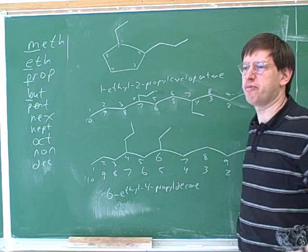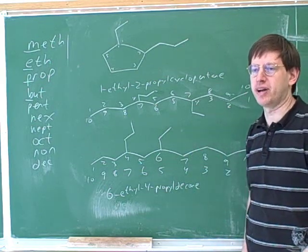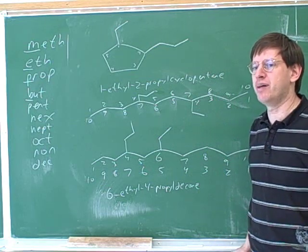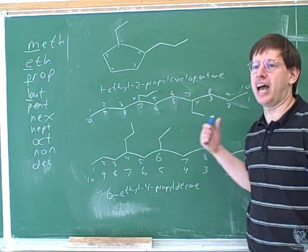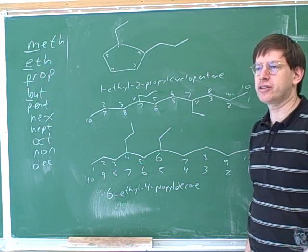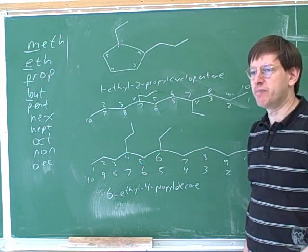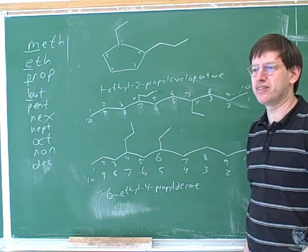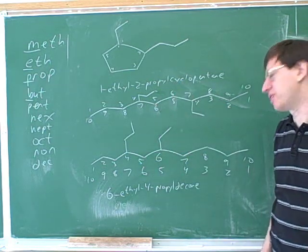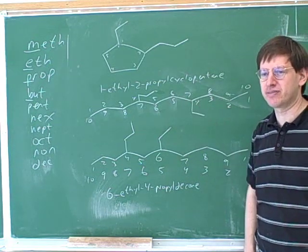Now we have to use alphabetization to decide what direction to number in, because we've got to choose one or the other. We only use alphabetization for numbering if there's a tie. If I numbered from the left, my two locators would be four and seven. And if I numbered from the right, my two locators would also be four and seven. So that's a tie — there's a tie between those two ways of numbering, so only now are we forced to use alphabetization.